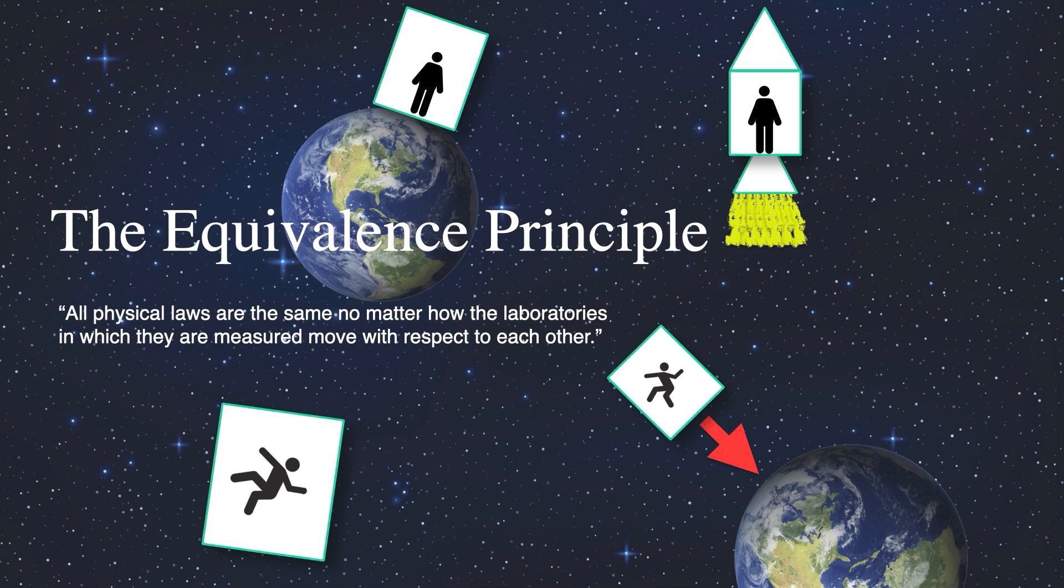In my lectures on general relativity, I went into great detail about the concept of the equivalence principle. The equivalence principle represents Einstein's profound insight into the nature of space and time. Essentially, it states that all physical laws remain the same regardless of how the laboratories in which they are measured are moving with respect to each other.